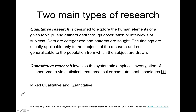The first is qualitative research, which is designed to explore human elements of a topic. It usually gathers data through observations or interviews of subjects, and typically does not use the same kind of quantitative methods as the other type of research, which is quantitative research — the systematic empirical investigation of phenomena. Finally, there can be research in which both qualitative and quantitative approaches are used.